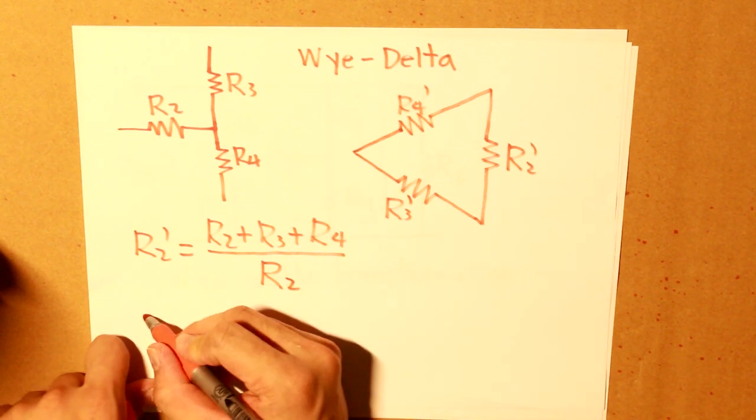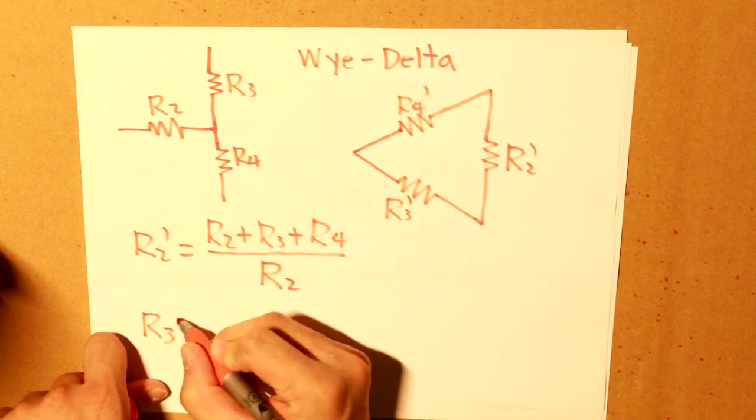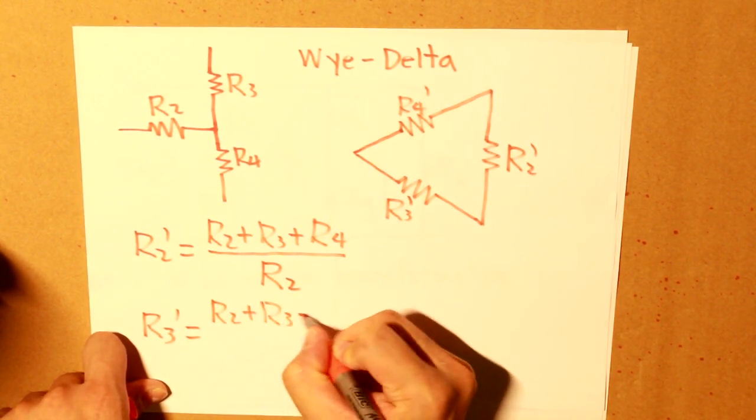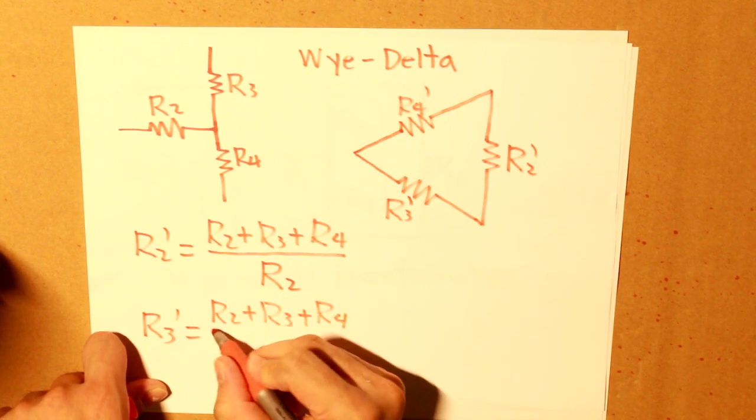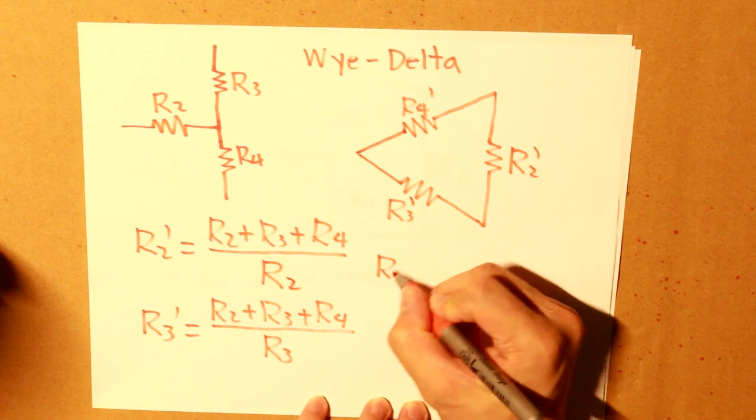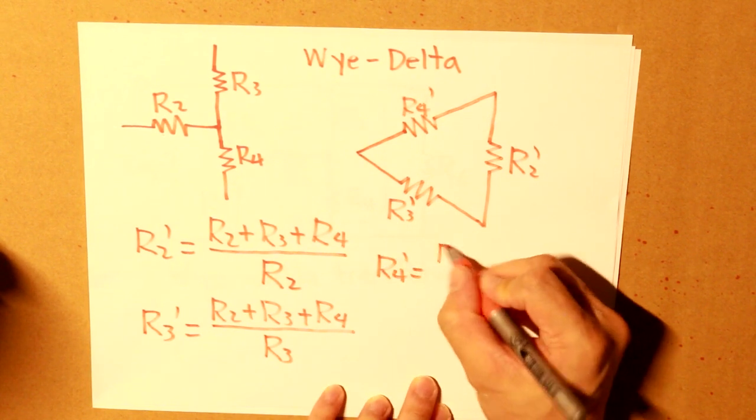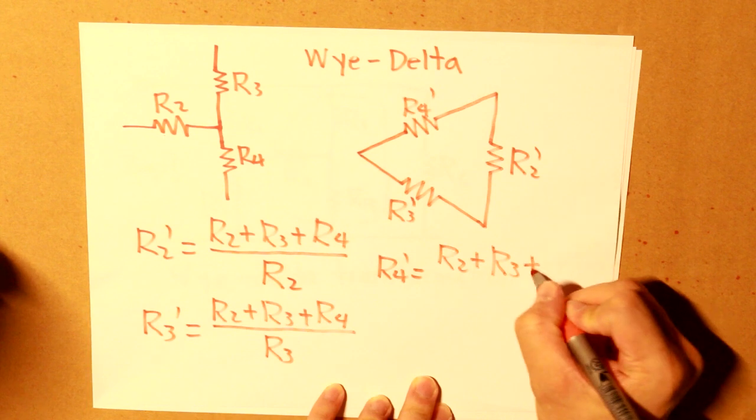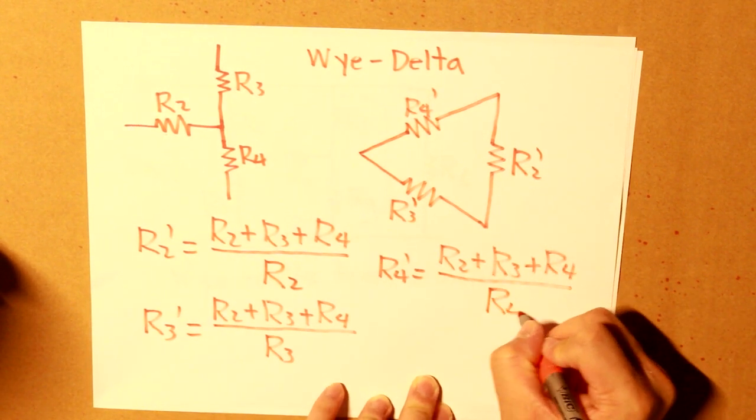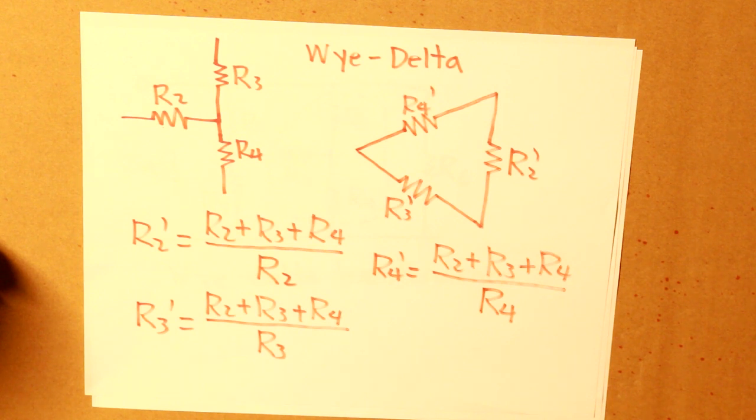And we divide that by the resistor and we get the equivalent form of that. Consecutively, R3 apostrophe would be the sum of all three resistors divided by R3, then R4 apostrophe would be divided by R4.